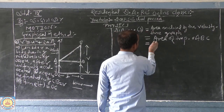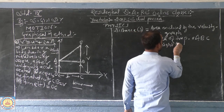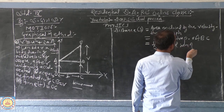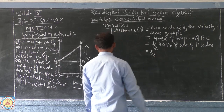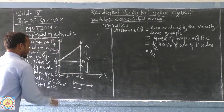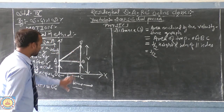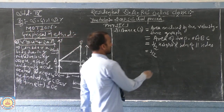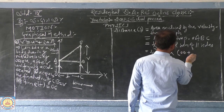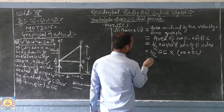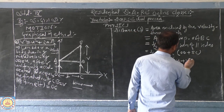The area of trapezium OABC is given by the formula: area = ½ × height × sum of parallel sides. Here, OC is the height, and OA and BC are the two parallel sides. So the area = ½ × OC × (OA + BC) = ½ × t × (u + v).